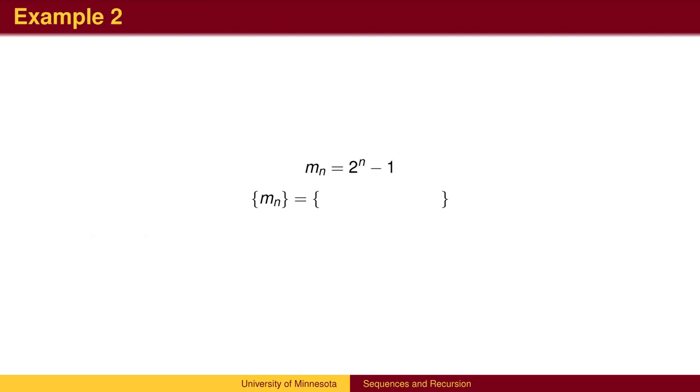Here's another example using an explicit definition. To find the first term, m sub 1, we plug 1 into the formula. 2 to the first power minus 1 equals 1. Plugging in 2, we get 2 squared minus 1, which is 3.